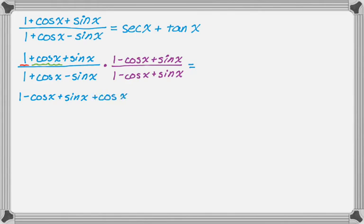That'll give me plus cosine minus cosine squared plus sine times cosine. Now I'm going to take sine and distribute it through. So that'll be plus sine minus sine times cosine and then plus sine squared.